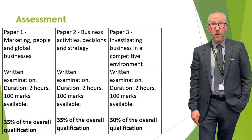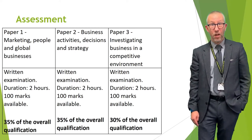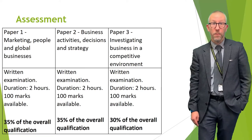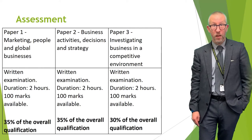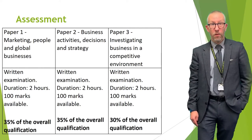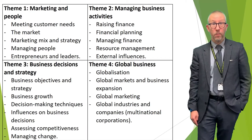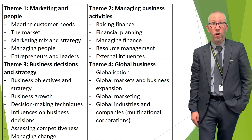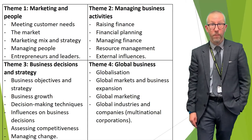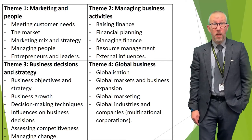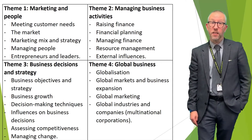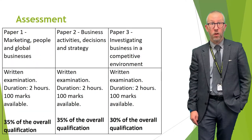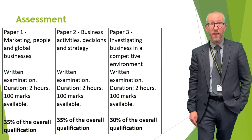You will be assessed via three papers. Each paper is two hours long. Paper one and paper two are each worth 35% of the mark, and paper three is worth 30% of the mark. Paper one will test you on themes one and four, paper two will test you on themes two and three, and paper three will test you on all four themes. It is 100% exam, graded A-star down to U.